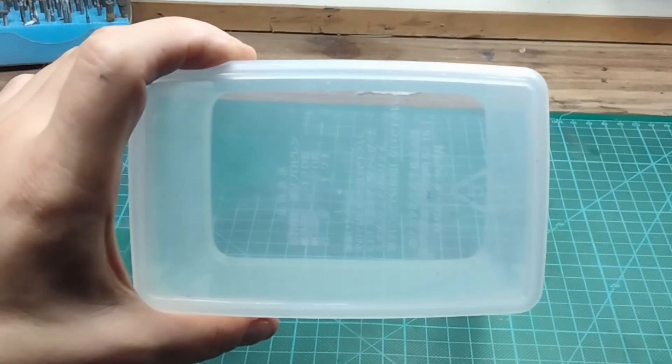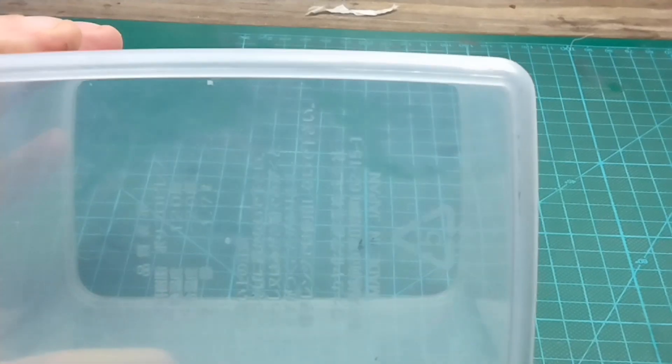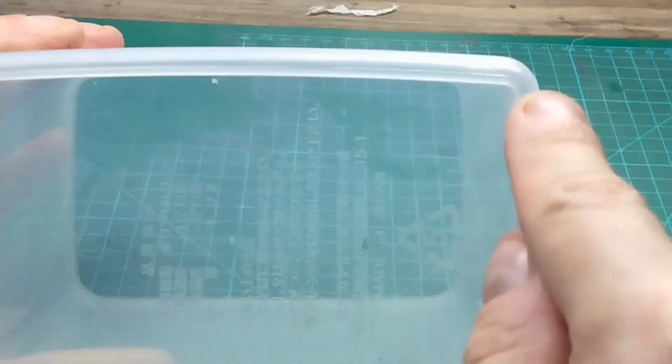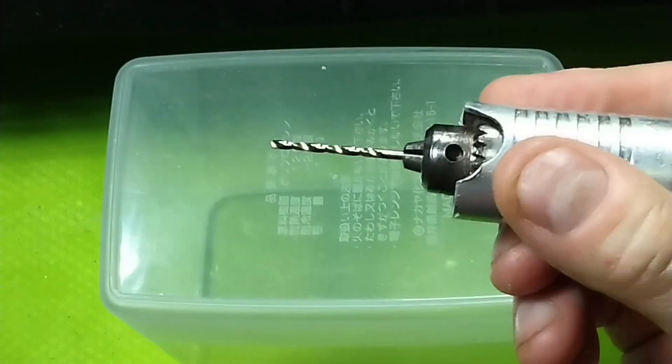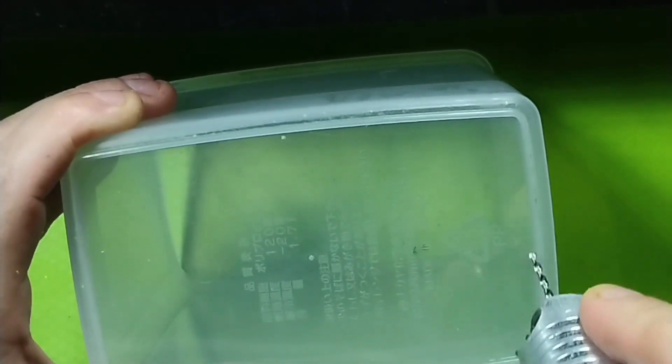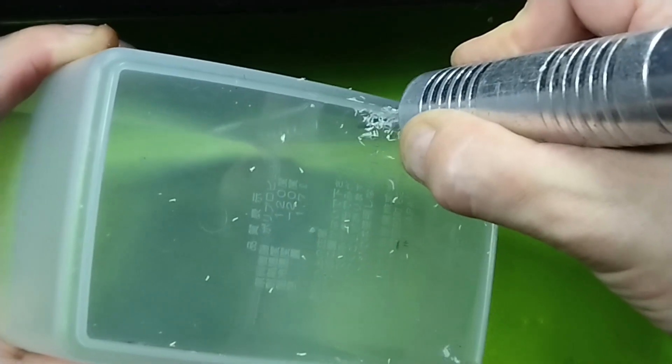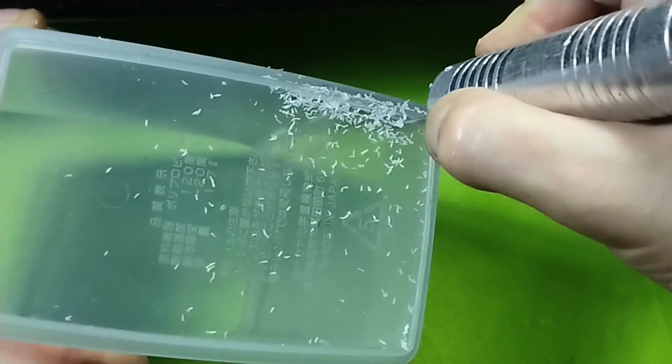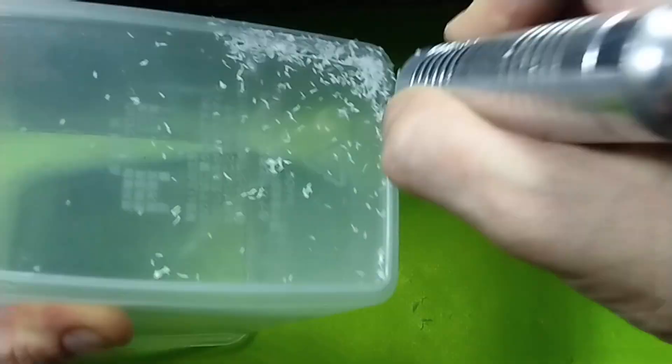Next step, cut out the bottom leaving the ledge for the filter material to rest on. I'll use this line as a guide. There are a lot of ways to cut plastic. This way with a regular 2 mm drill bit works really well and is super easy to get. I'm using my flex shaft and you can also use a drill.